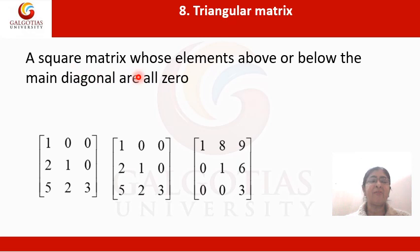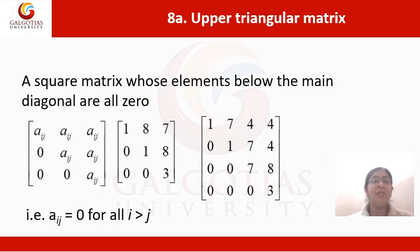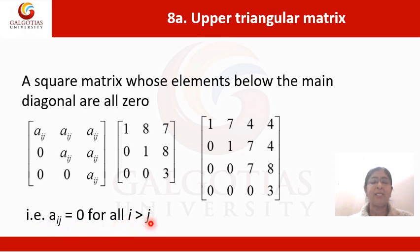Next is a triangular matrix. A square matrix whose all entries above or below the main diagonal are all 0s is said to be a triangular matrix. For example, it is a triangular matrix of order 3 by 3. An upper triangular matrix is a square matrix whose elements below the main diagonal are 0. All entries below the main diagonal are 0, and that is, A_ij equals 0 for all i greater than j.